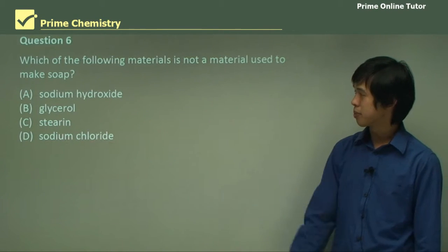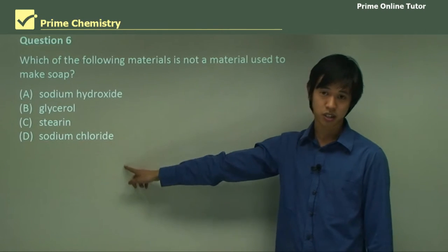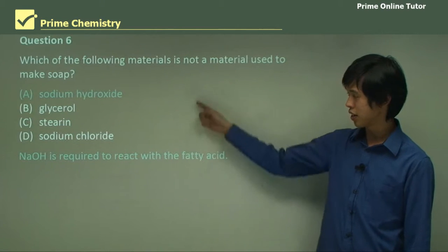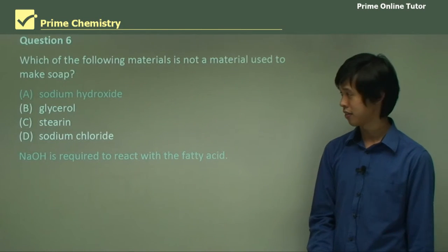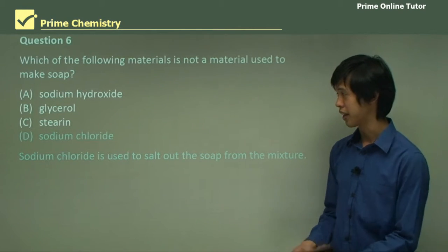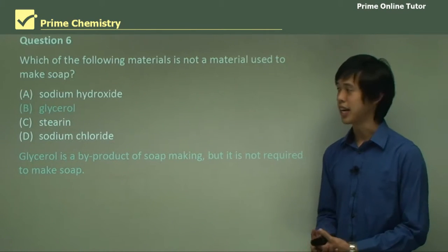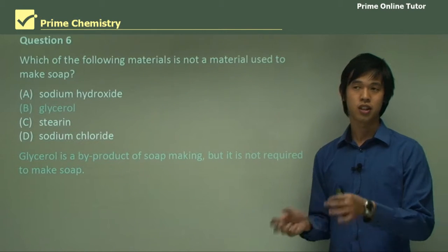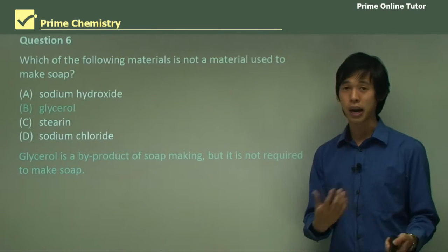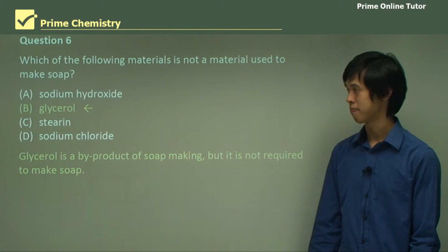Which of the following materials is not used to make soap? Sodium hydroxide is definitely used. Stearin is used as a source of fatty acids. Sodium hydroxide is required to react with the fatty acid, and sodium chloride is used to salt out the soap from the mixture. All that's left is glycerol, which is just a byproduct of the reaction. We take stearin, react it with sodium hydroxide, and get out soap and glycerol — so glycerol is a byproduct. The answer is B.